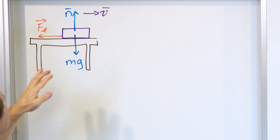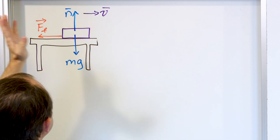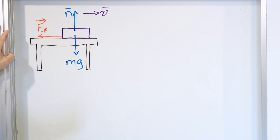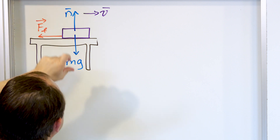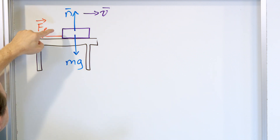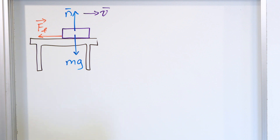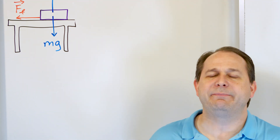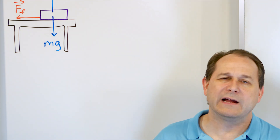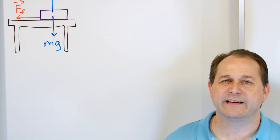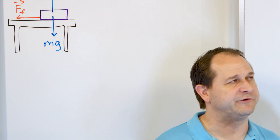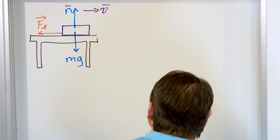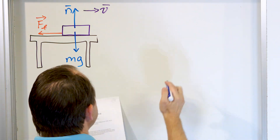Notice this situation is different from the last problem — here we have an unbalanced situation. We do have an up and a down force that look to be equal and opposite because the block is not moving up or down, but there is an unbalanced situation in the horizontal direction. Because there's an unbalanced force in the x direction, there must be some acceleration. Let's do a little more work and see if we can figure out what that acceleration is.